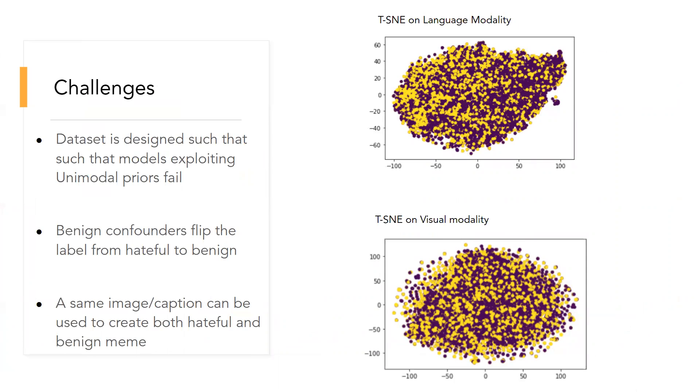They do this by using benign confounders in the dataset. That is, for every hateful meme, they find an alternative image or caption which, when replaced, is enough to make the meme benign. This also reflects in the TSA analysis of the modalities, where we see that there is no separation between different classes.